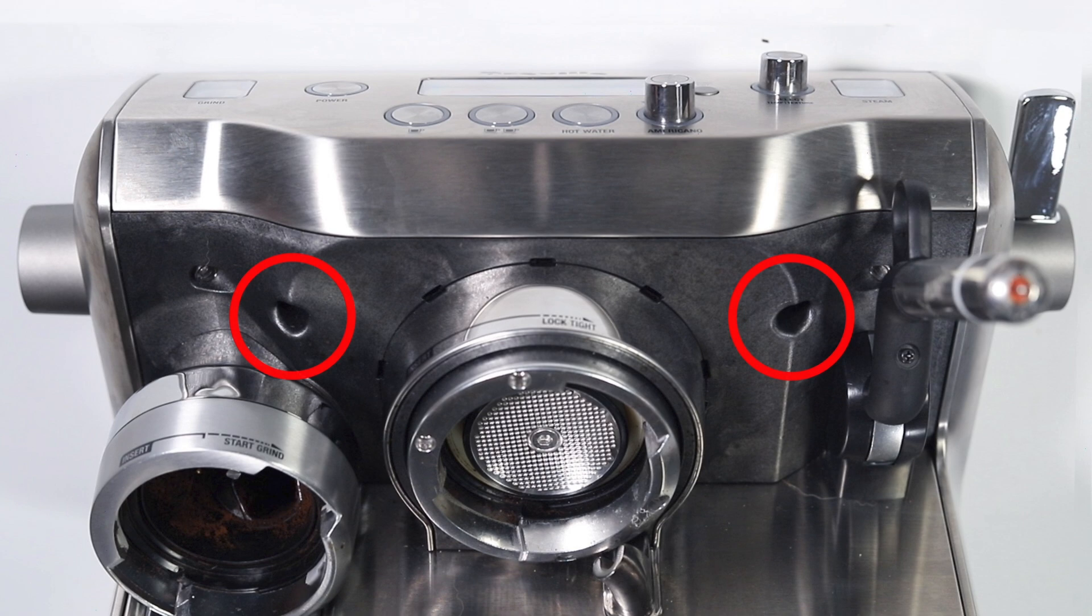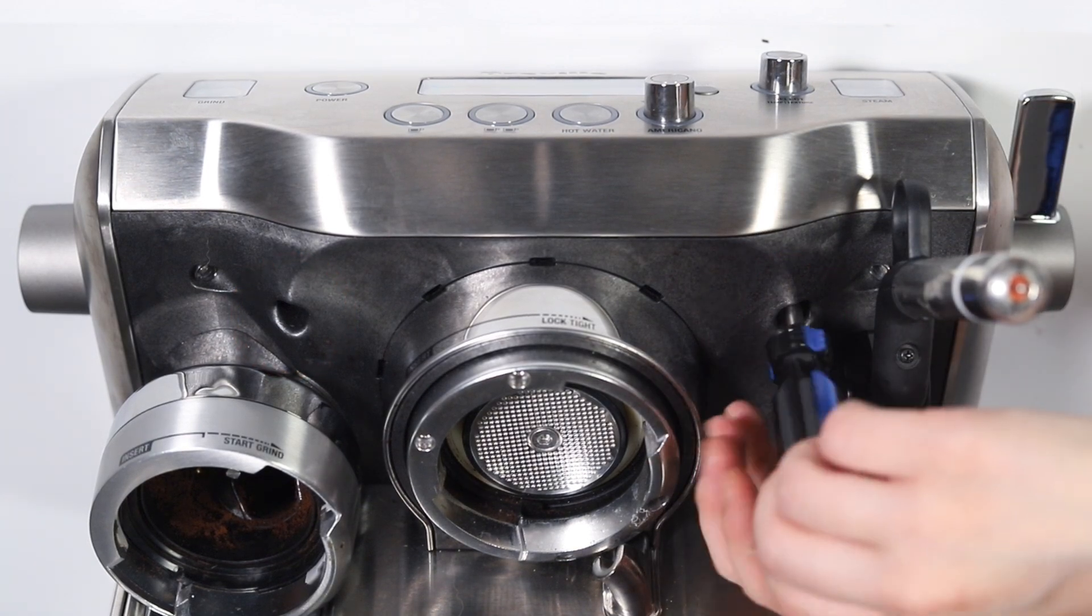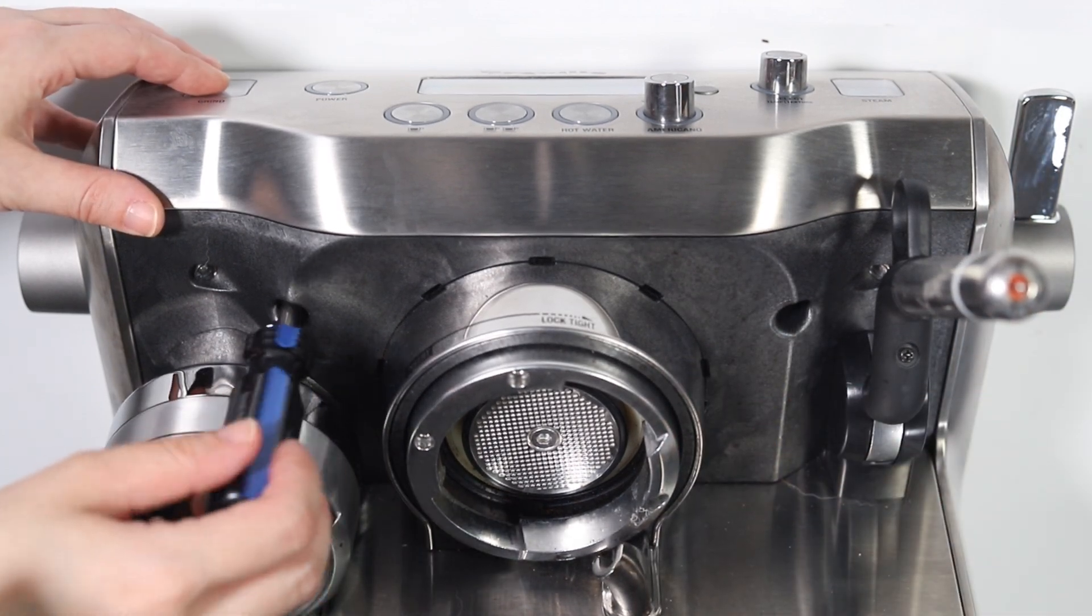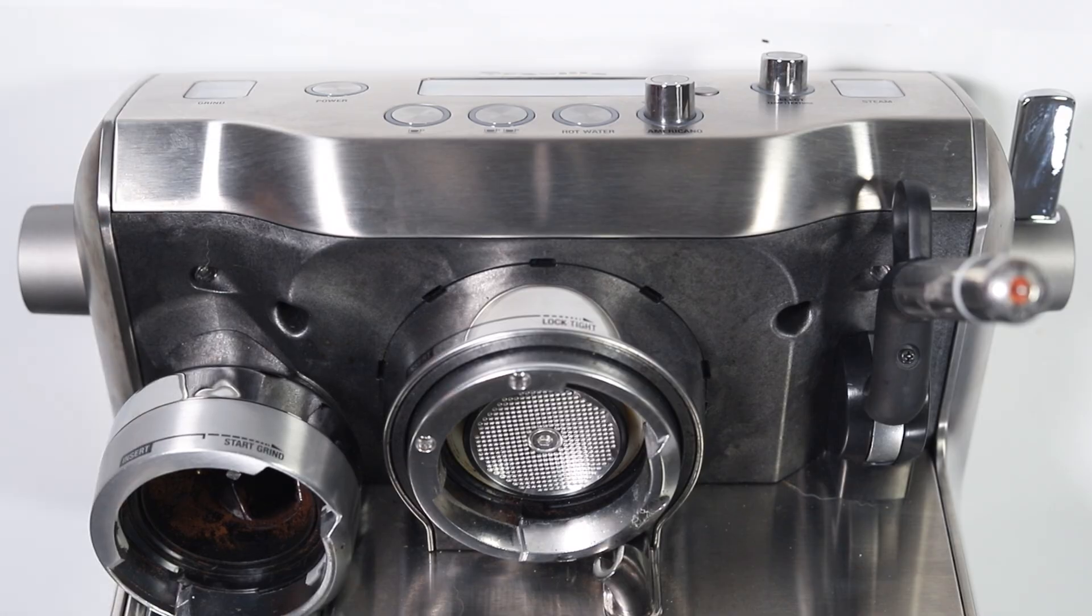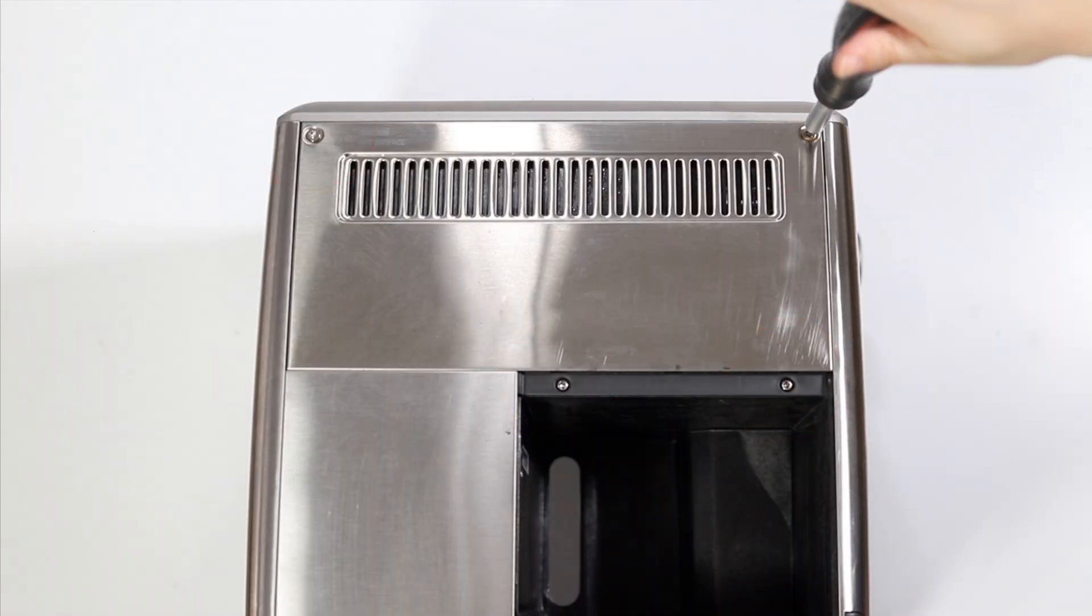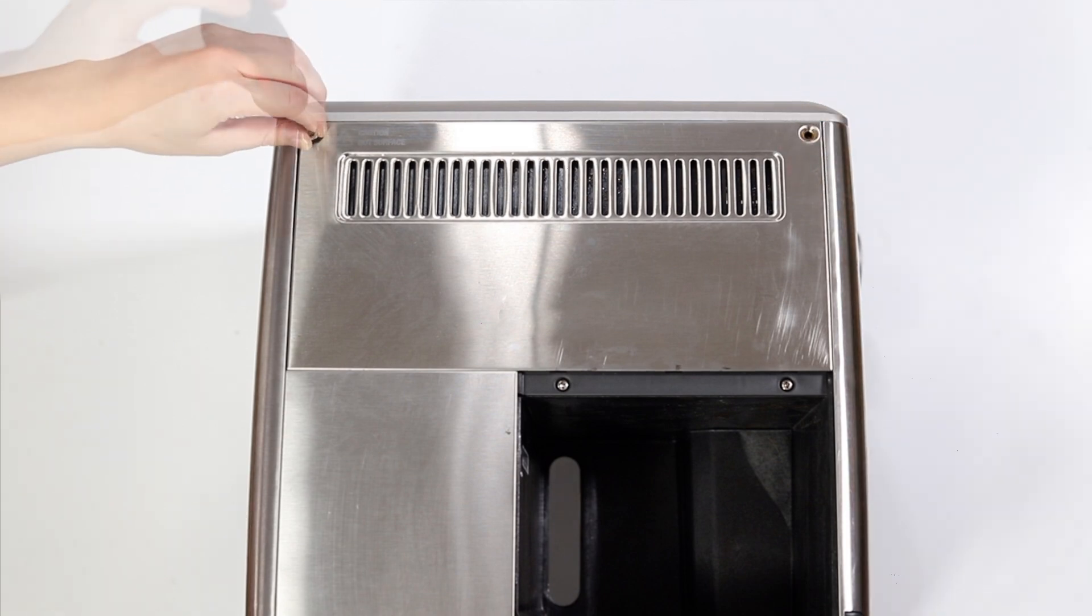Let's begin by removing the two screws located near the brew head. Remove the four screws on the back of the machine. Use a Torx screwdriver for the top two screws and a Phillips screwdriver for the bottom two near the water tank.